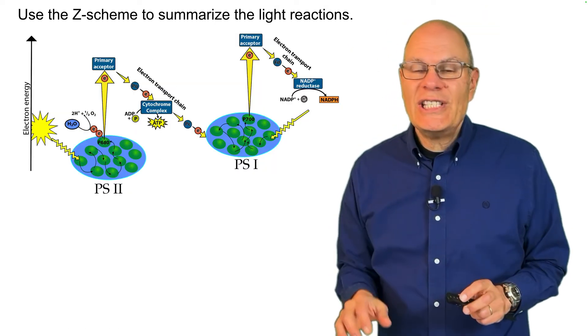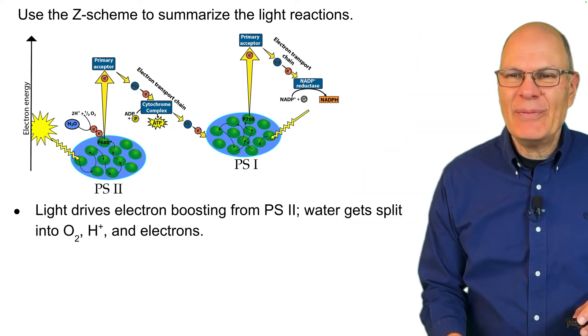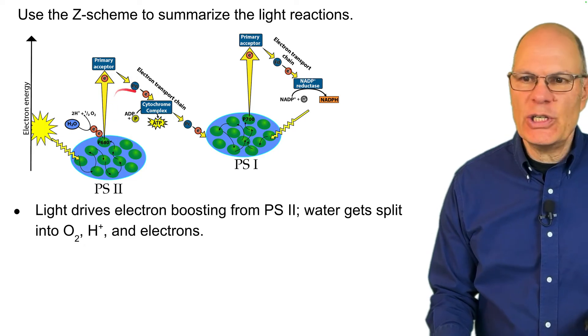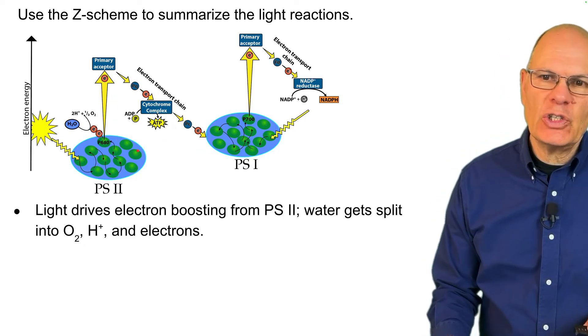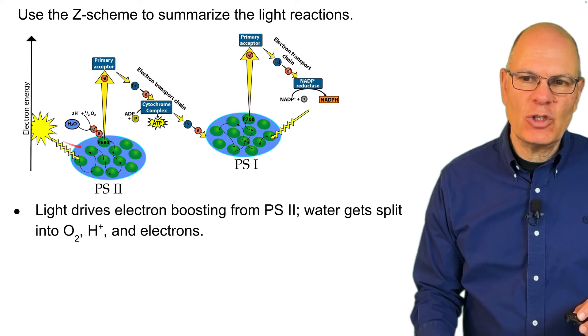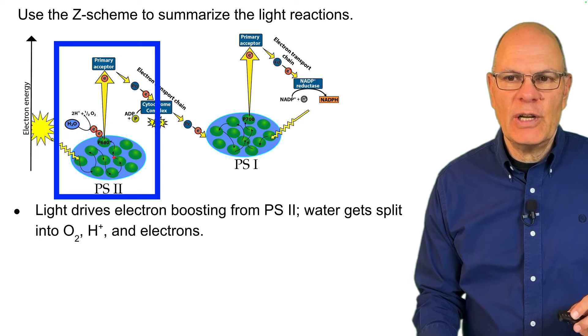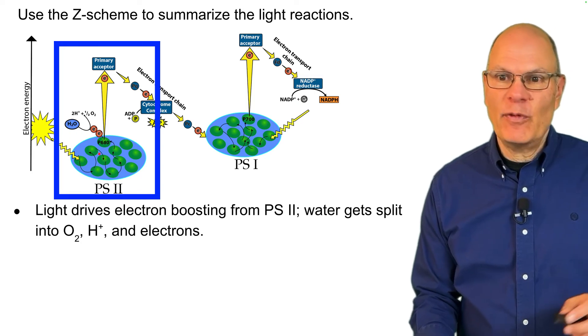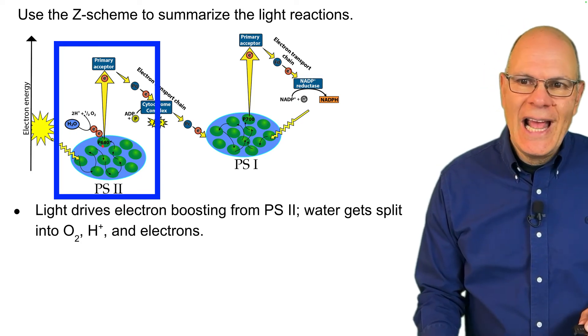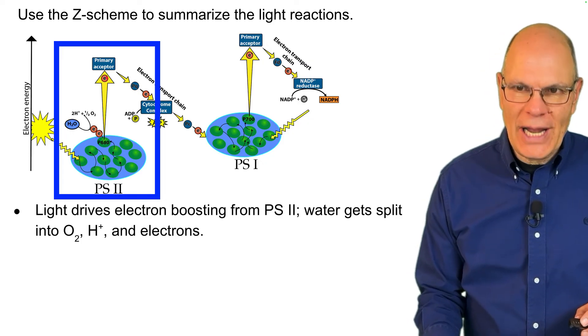Use the Z scheme to summarize the light reactions. The Z scheme is a graphical representation of everything that happens in the light reactions. This axis over here, the Y axis, shows electron energy. So what happens? Light drives electron boosting from photosystem II. Remember, photosystem II comes first. And so that electron goes to a much higher energy level. And at the same time, water is split apart into protons and oxygen gas.